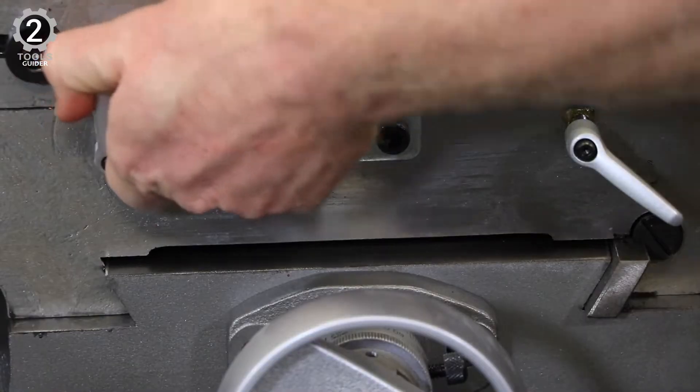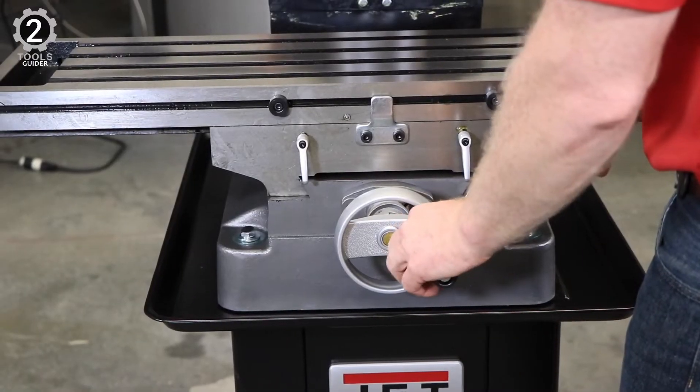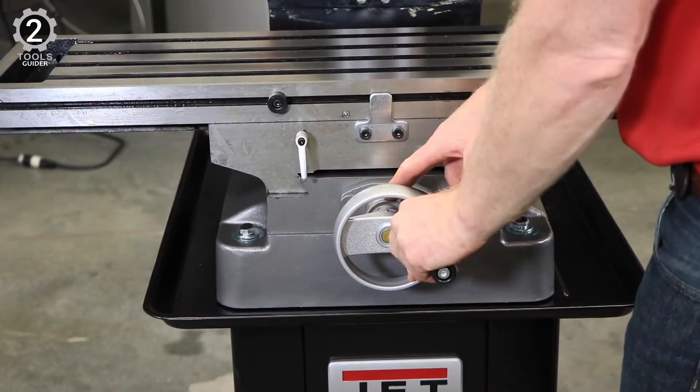For additional support and stability, the Jet JMD 18 350 018 Mill Drill with R8 Taper offers a cast-iron column and heavy-duty, tapered roller bearings for greater tolerance and more precise drilling depth.